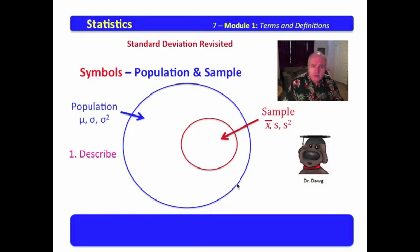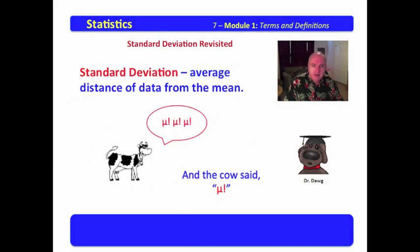Now, we can use these statistics to describe the population and to describe the sample. Before long, we will take a sample and gather descriptive information about the sample to infer information about the population mean and standard deviation and distribution.